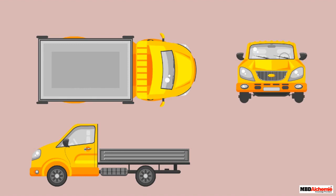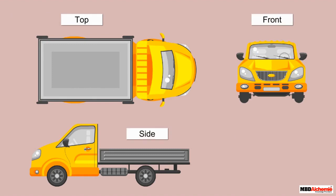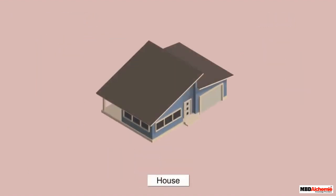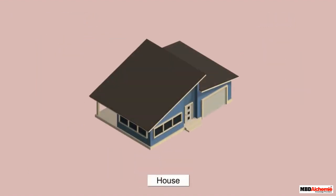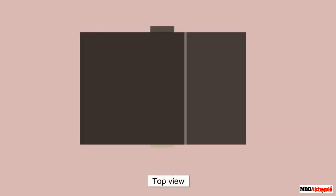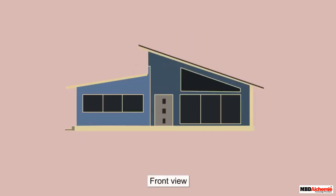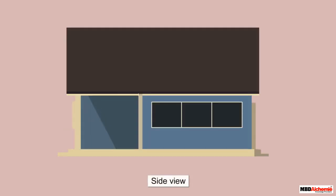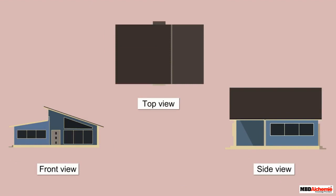We will see the top, front, and side views of some objects. House: top view of a house, front view of a house, side view of a house. These are the three views of a house.